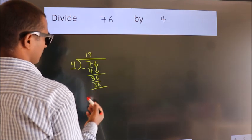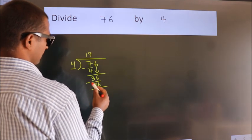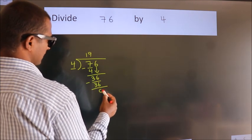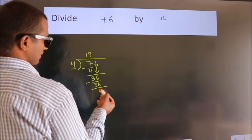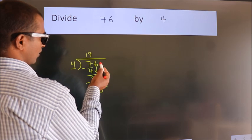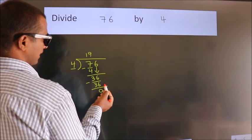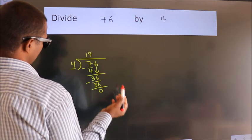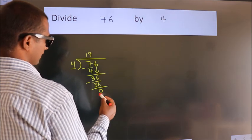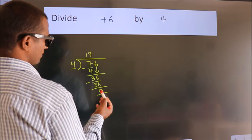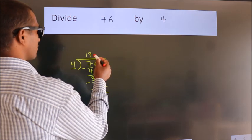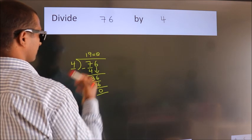Now we subtract. We get 0. After this, no more numbers to bring down, and we got remainder 0. So this is our quotient.